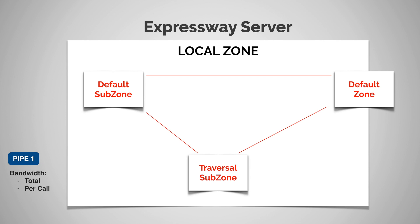For example, I can take pipe1 and apply it to the link between the default subzone and the default zone, and I can apply the same pipe to the link between the default subzone and the traversal subzone. In this case, we would say that we have only one pipe applied to two different links. Let's say pipe1 had a total bandwidth of 384k — that's what we've allocated for this pipe.